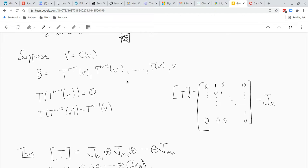Hi guys, okay in this last video I just want to take a look at if we have a cyclic subspace, what is the matrix of T look like on that subspace?